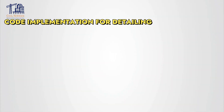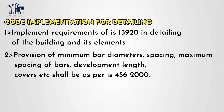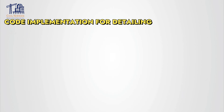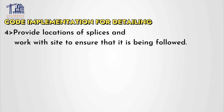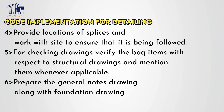Also verify the deflection of the member using the cracked section. The next most important point is code implementation for the detailing part. Implement requirements of IS 13920 in the detailing of the building and its components like slab, beams, and columns. Similarly, for the shear wall as well, provision of minimum bar diameters, spacing, maximum spacing of bars, development lengths, and covers — all these parameters shall be as per IS 456 or your relevant code for your RCC structure. Refer to relevant SP codes like SP34 and SP16 for detailing of concrete structures and specific applicable details for slab, staircase, and special elements. Provide locations of splices and work with site to ensure they are being followed. For checking drawings, verify the DOQ items with respect to the structural drawings and mention them wherever applicable. Prepare the general notes drawing along with the foundation drawing.